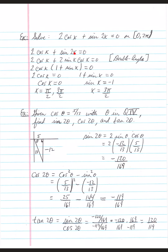These two terms share a factor of 2cos(x), so factor that out: 2cos(x)(1 + sin(x)) = 0. Set each factor equal to zero. For cos(x) = 0: the x-coordinate is zero at π/2 and 3π/2. For 1 + sin(x) = 0, sin(x) = −1: the angle where the y-coordinate is −1 is 3π/2.